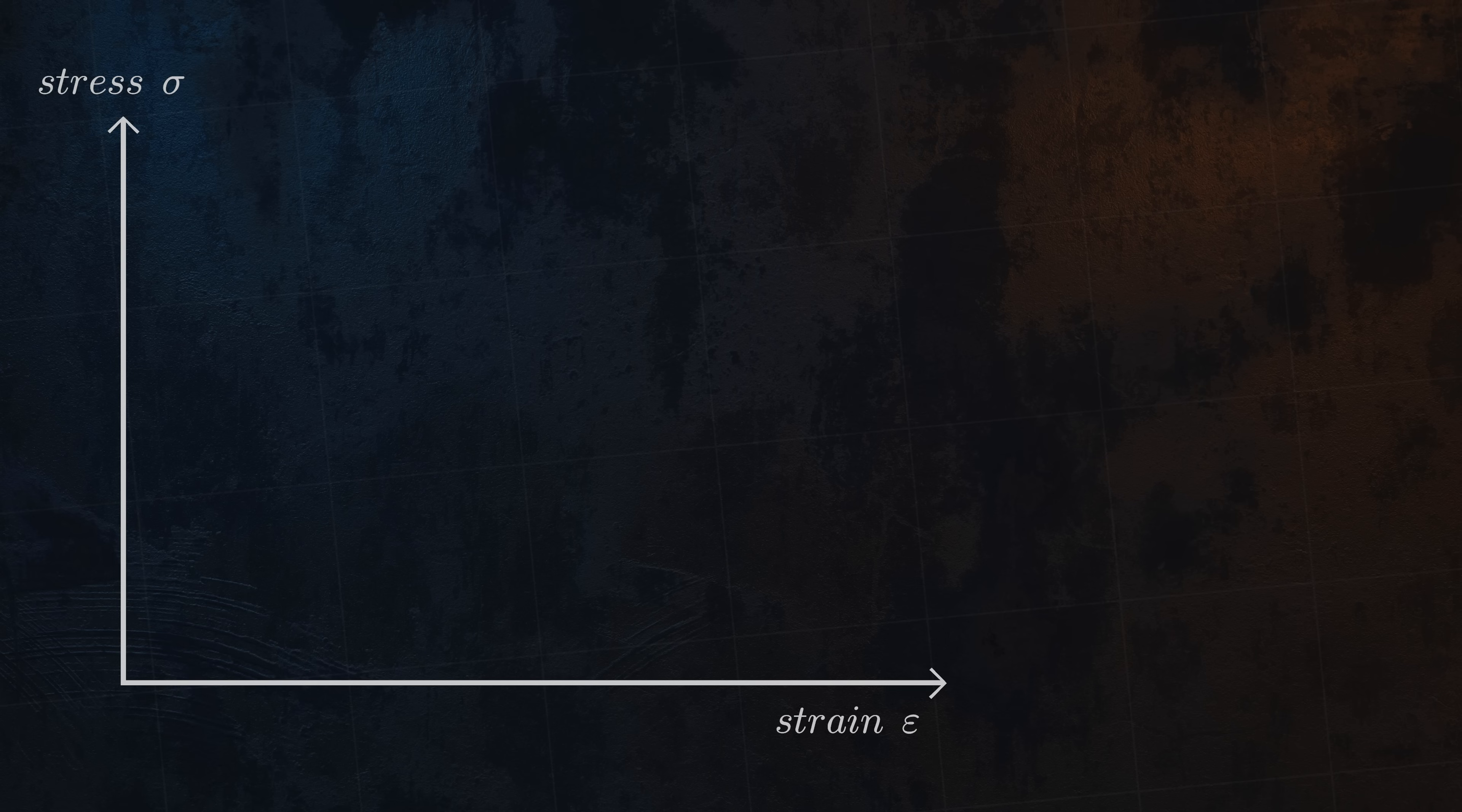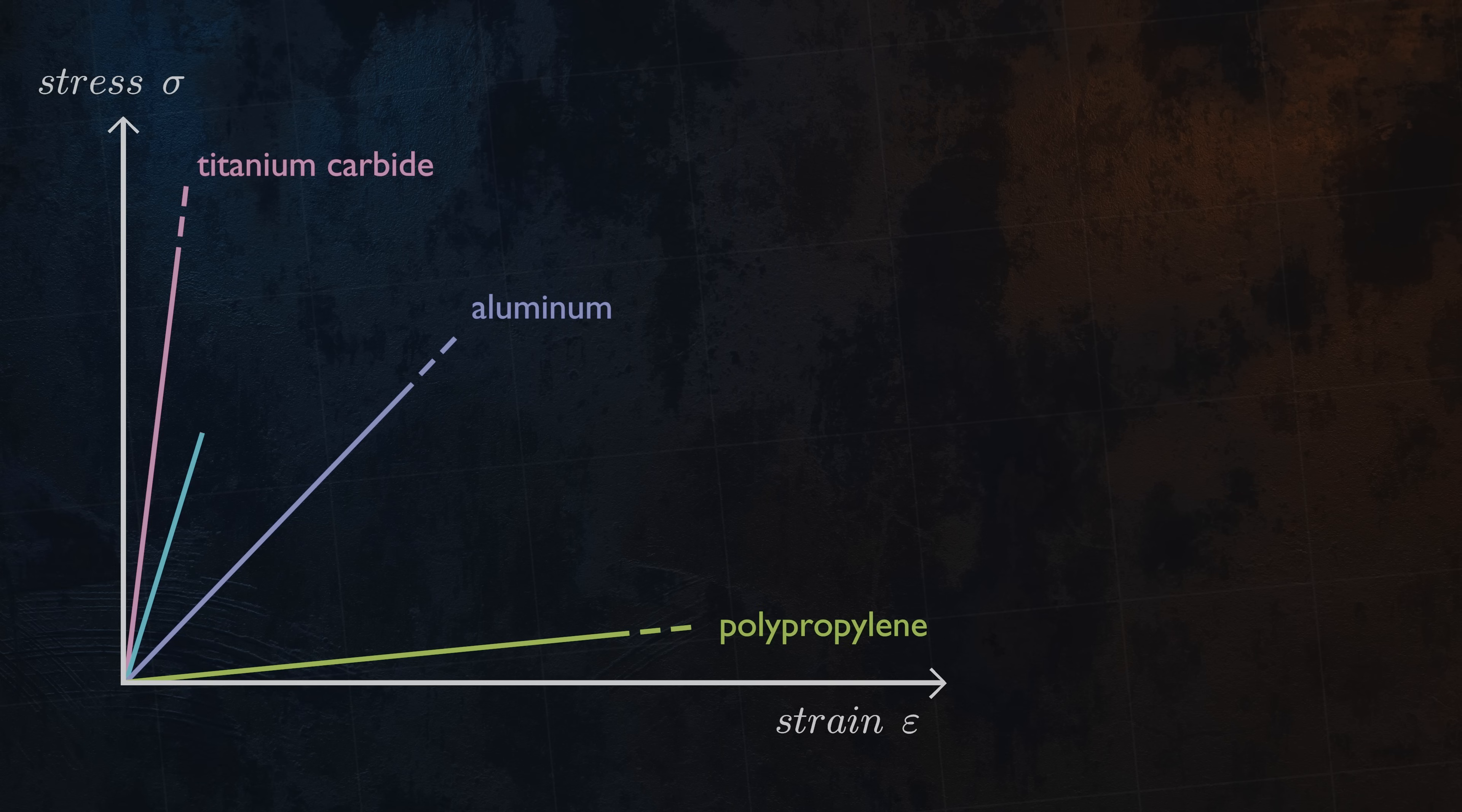If we perform tensile tests for a few different materials, we will notice that the slope of the stress-strain curve is different for each of them. Different materials can have vastly different values for Young's modulus.